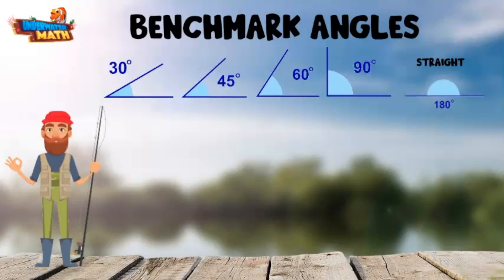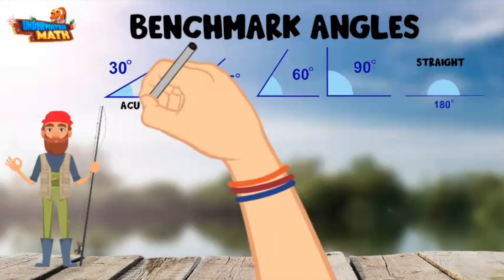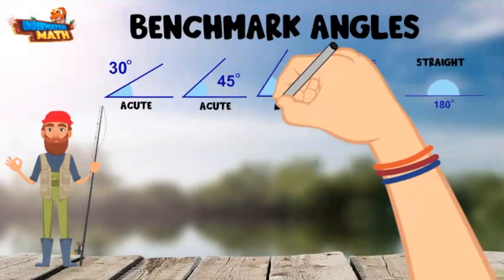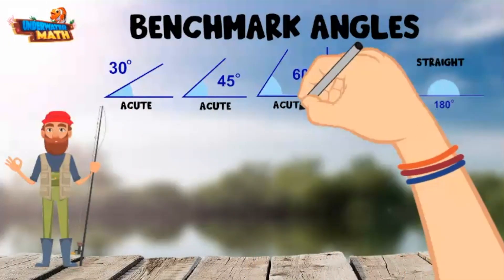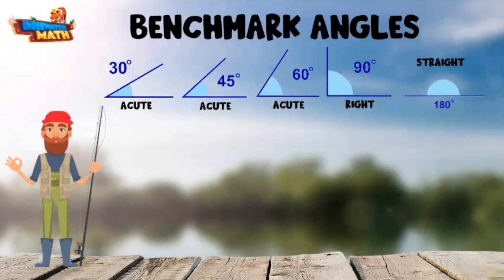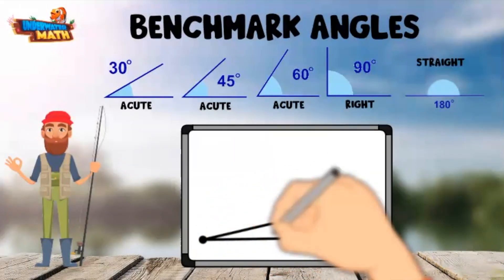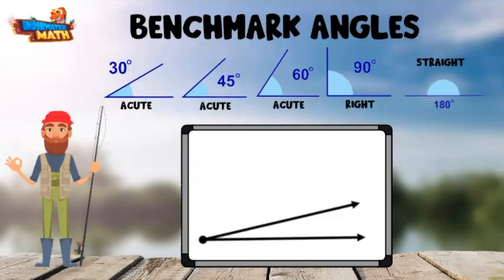45 degrees is half of 90 degrees, so you can always remember that 45 degrees looks like half of a corner. It's also helpful to remember acute angles, right angles, and obtuse angles. Acute angles are our little angles that measure less than 90 degrees. Right angles measure exactly 90 degrees, and obtuse angles are larger than 90 degrees but less than 180 degrees. I'll keep these angles up here to reference as we go along.